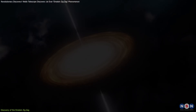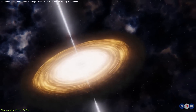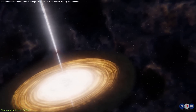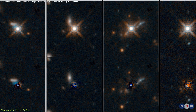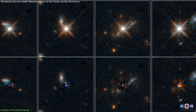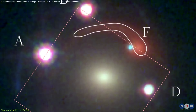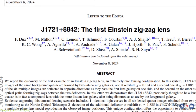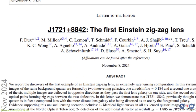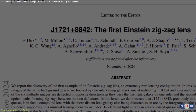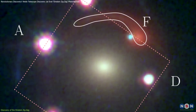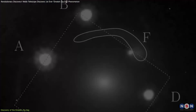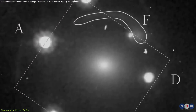Statistically, astronomers estimate that only 1 in 50,000 lensed quasars would exhibit such a configuration. With just over 300 known lensed quasars, the Einstein zigzag is a marvel of cosmic coincidence. Frederic Du, one of the lead scientists behind the study, emphasizes that this alignment is so rare that it may be decades, or even centuries, before another similar discovery is made.